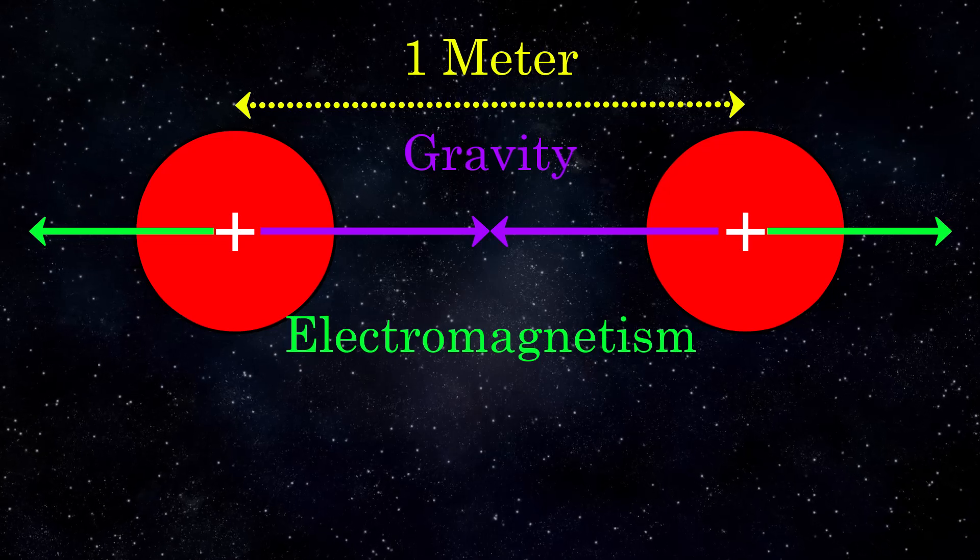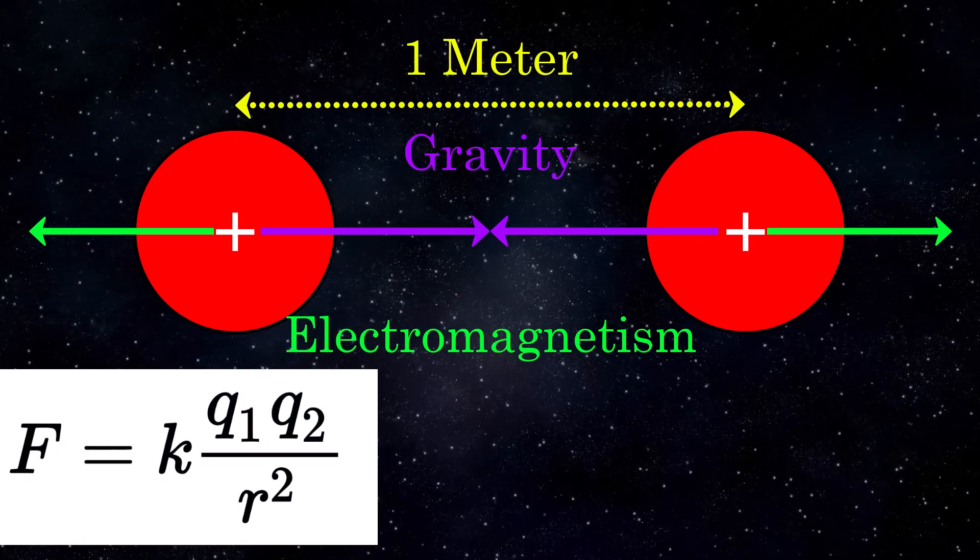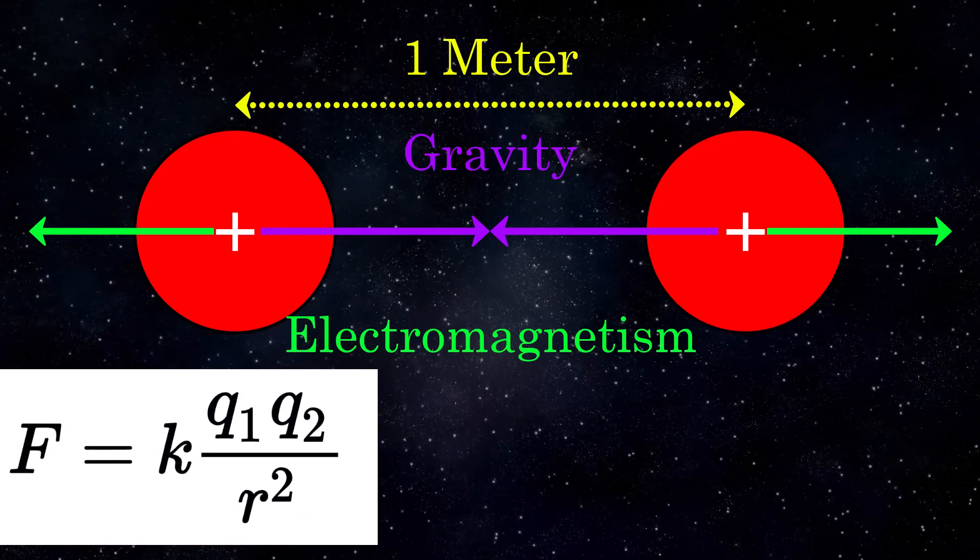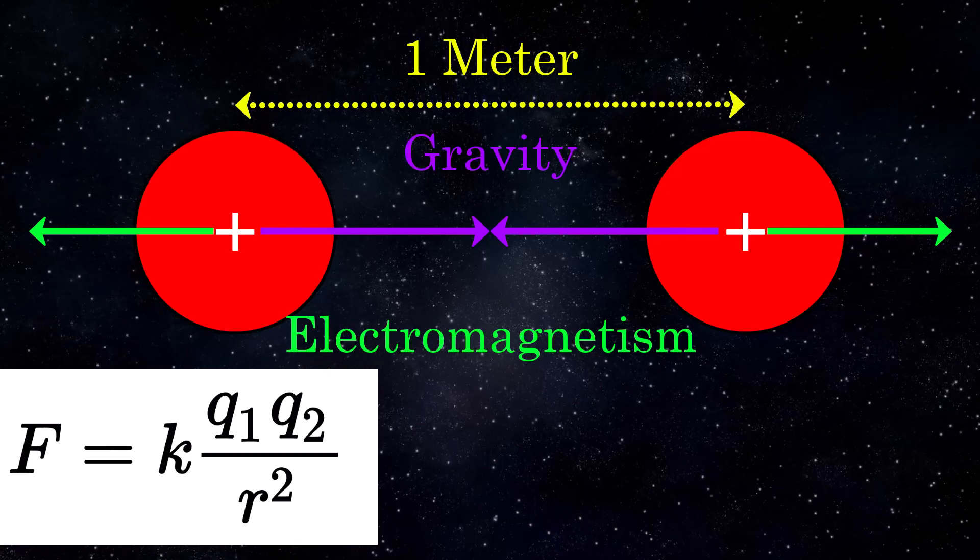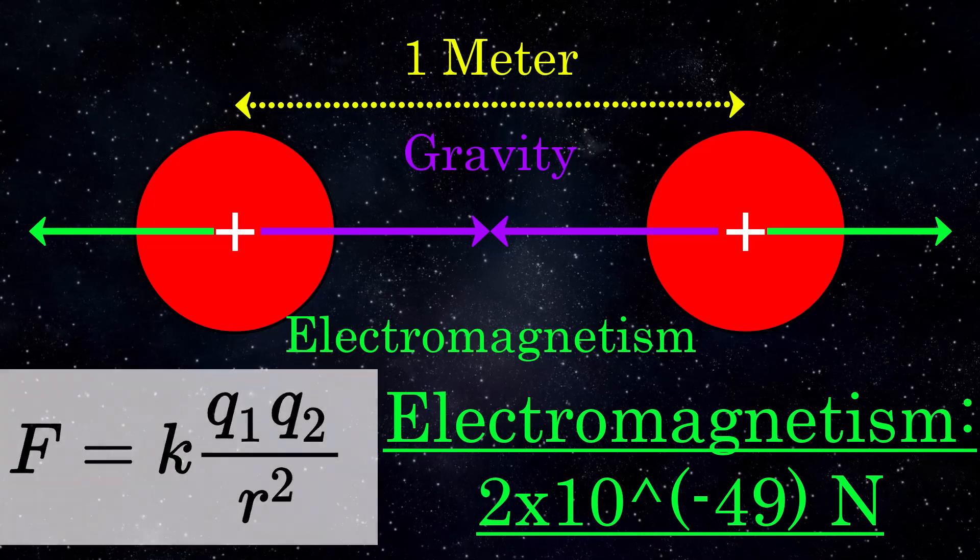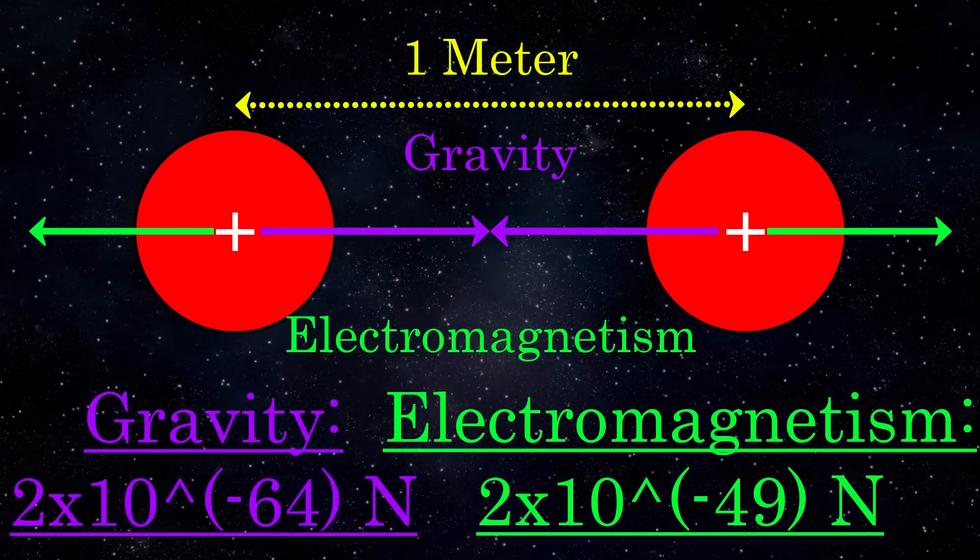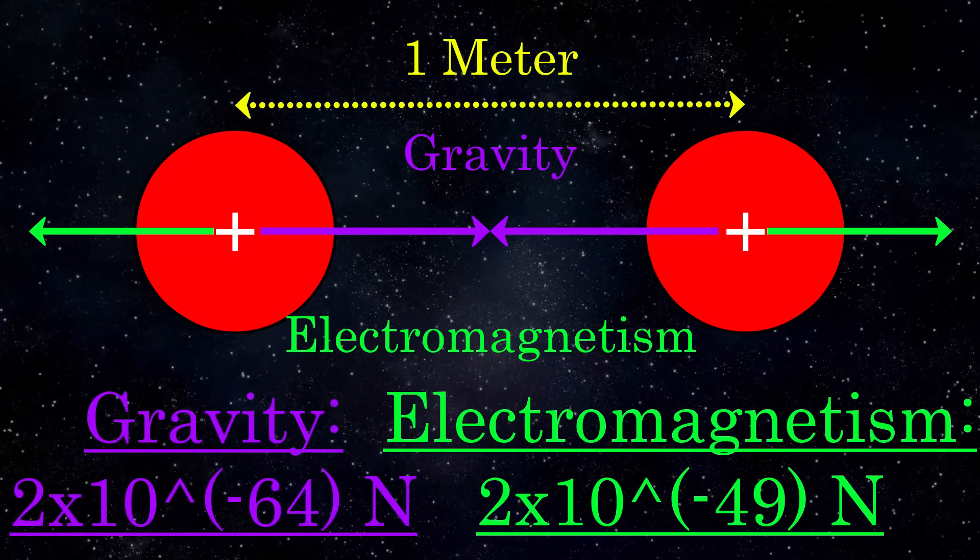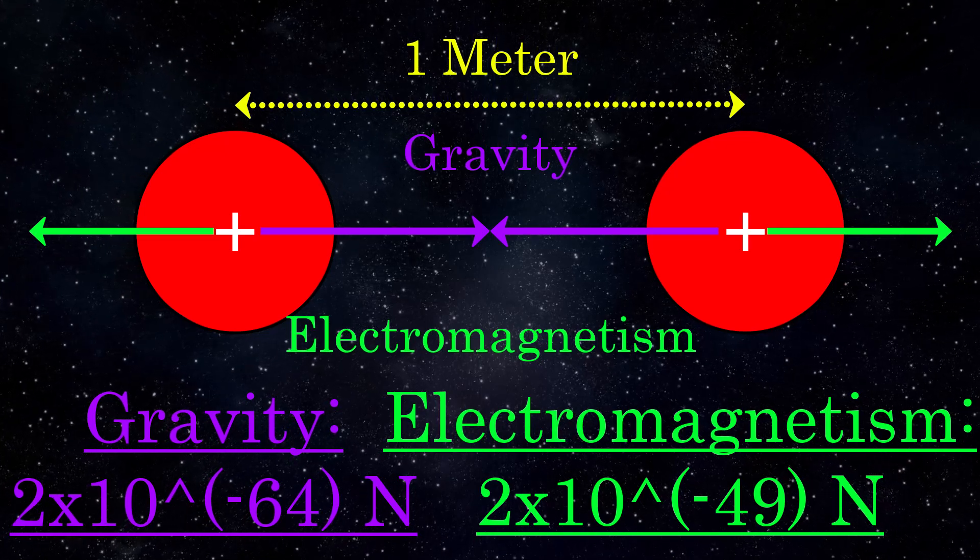For electromagnetism, we can work out the forces in Coulomb's law, as we know the charges are the same for each proton, and we know the value of the permittivity of free space. This gives a repulsive force of around 2 times 10 to the minus 49 newtons. So obviously, you can see how electromagnetism is over 15 orders of magnitude stronger, even at a relatively small scale.